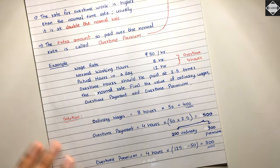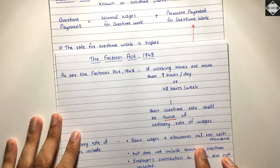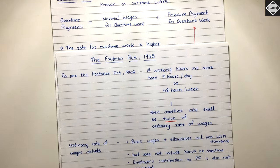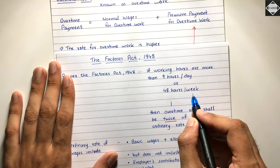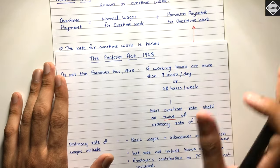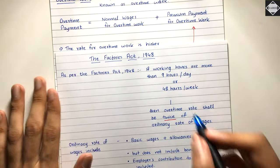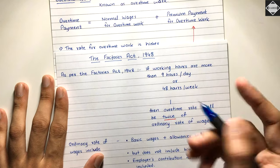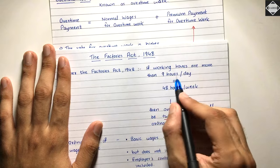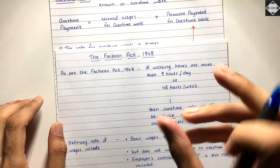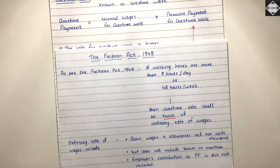Now let's look at the Factories Act 1948, which has a provision regarding overtime. The Factories Act says that if working hours are more than 9 hours per day or 48 hours per week, then overtime becomes applicable. So if a worker works 9 hours in a day, there's no overtime because it doesn't exceed 9 hours. If they work 9.5 hours, then 0.5 hours is overtime. If they work 10 hours, then 1 hour is overtime.